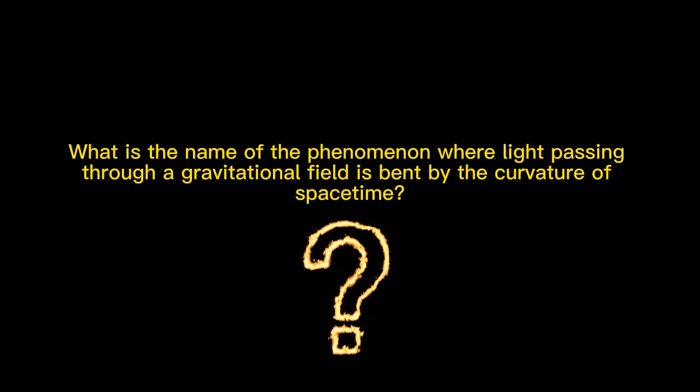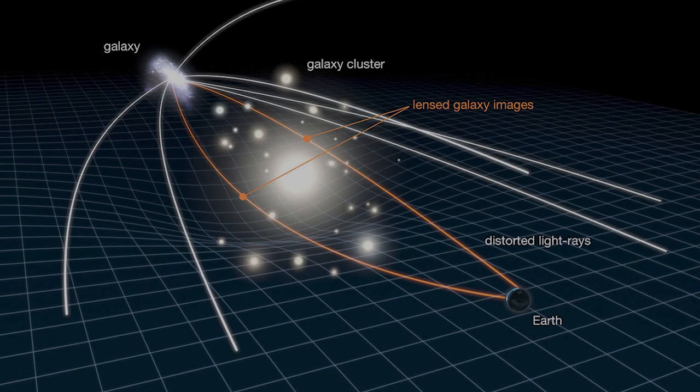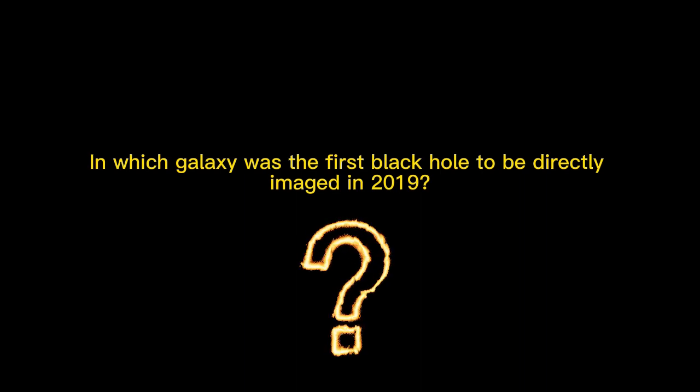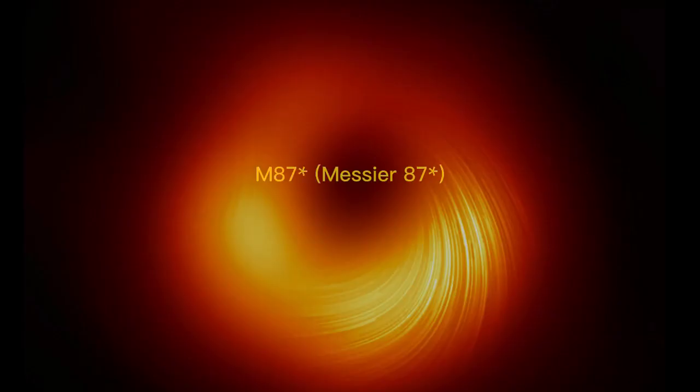What is the name of the phenomenon where light passing through a gravitational field is bent by the curvature of space-time? Gravitational Lensing. In which galaxy was the first black hole to be directly imaged in 2019? M87 asterisk.